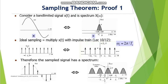Here is the proof of the sampling theorem. The message signal x(t) has frequency domain representation X(ω), with message signal bandwidth B. We use the periodic impulse function — also known as a train of impulses or the Dirac comb function. The periodic impulse function is the only function whose Fourier transform is again a train of impulses. The analog signal is multiplied by the train of impulses to obtain the sampled signal.